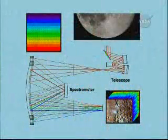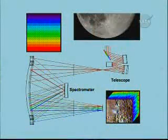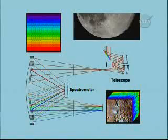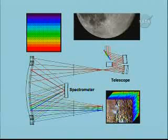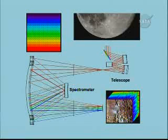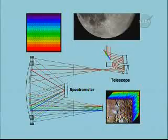This graphic depicts the type of instrument used with M³. White light is reflected from the Moon into a telescope; from the telescope the light is passed into a spectrometer, which breaks the natural light into the rainbow — the spectrum — and records that spectrum for each point in the image, producing an image cube containing a spectral signature for each point from which we can determine the composition of the surface.